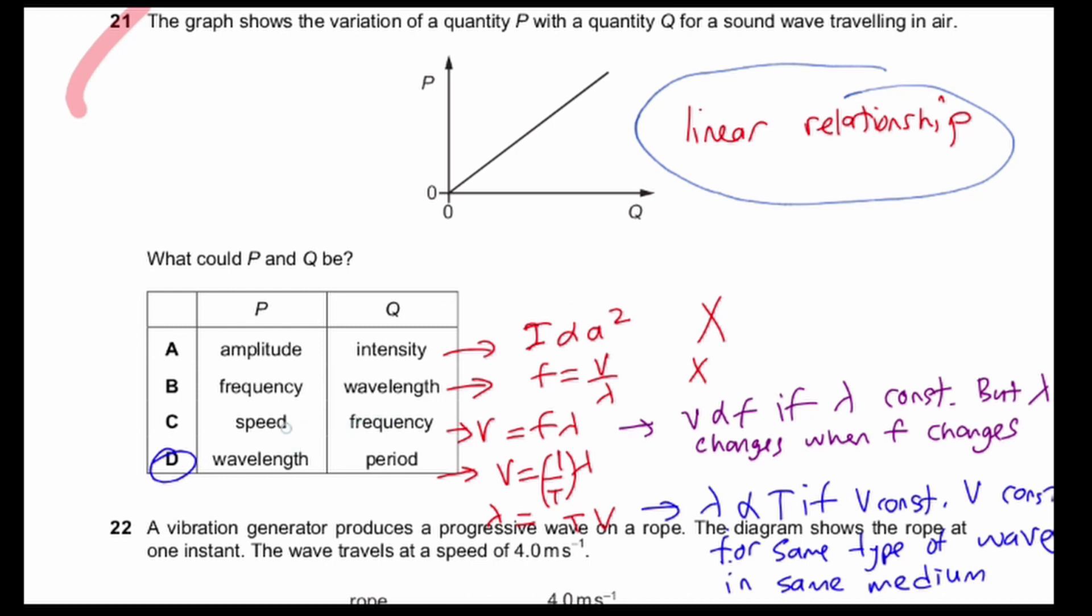So let's look at C first. From the formula, V equals F lambda. So it seems that V is proportional to F when your lambda is constant. But that's the problem.